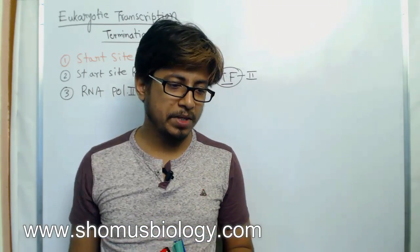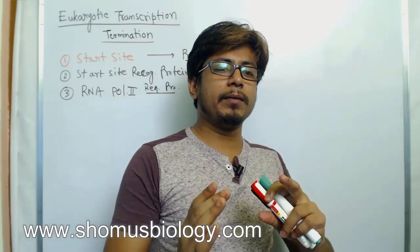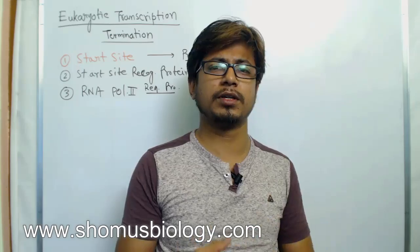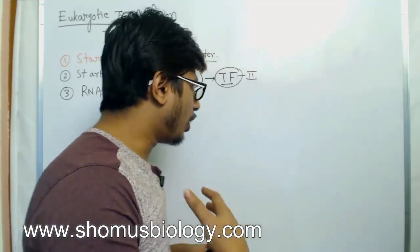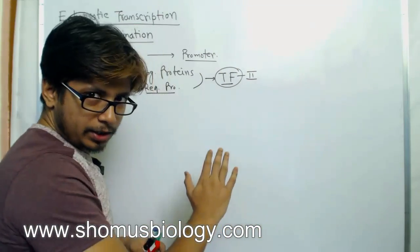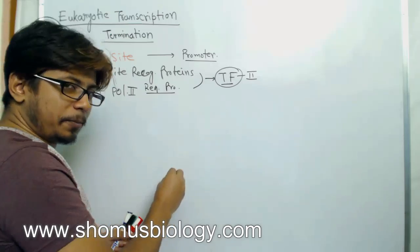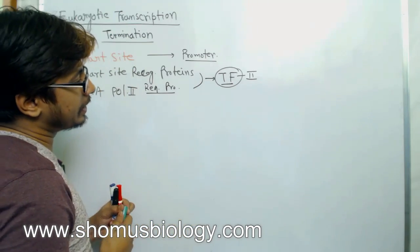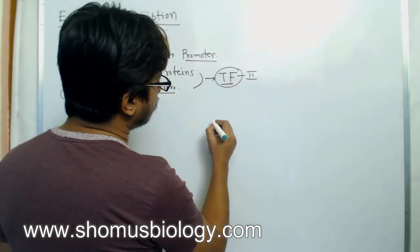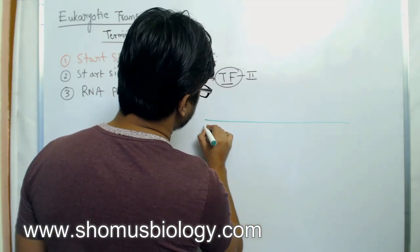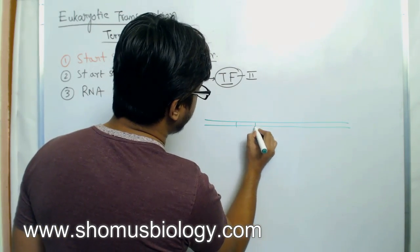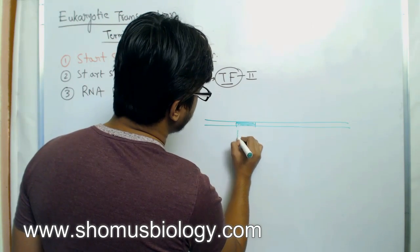Like every single process in a cell — whether it's DNA replication, transcription, or translation — they always need two points for their journey: a start point and an end point. The same thing happens in the case of eukaryotic transcription. If I draw the DNA, one is the start site.